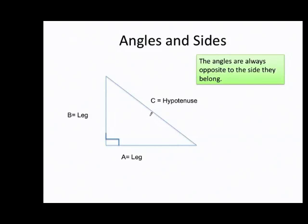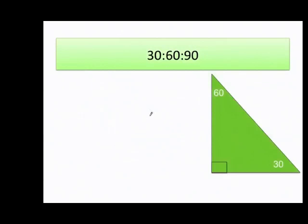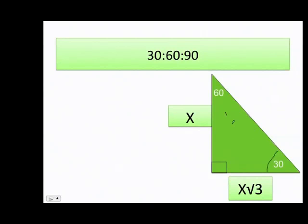Now let's talk about the 30-60-90 triangle. When you have 30 degrees, the value is going to be x. When you have 60 degrees, the value is going to be x times the square root of 3. And when you have the 90-degree angle, the value is going to be 2x.